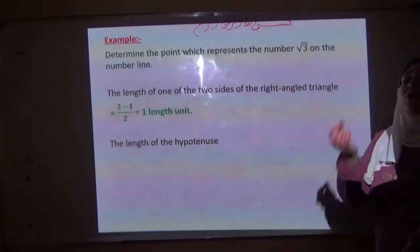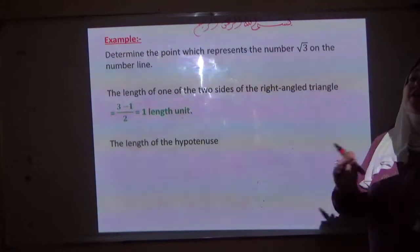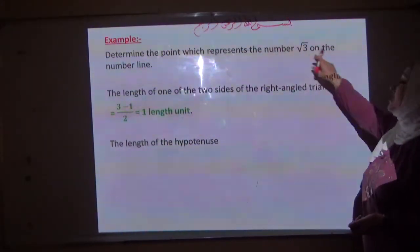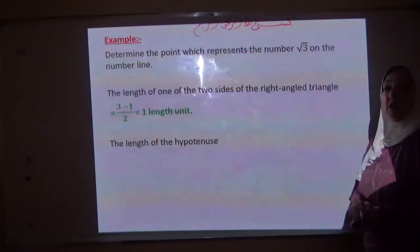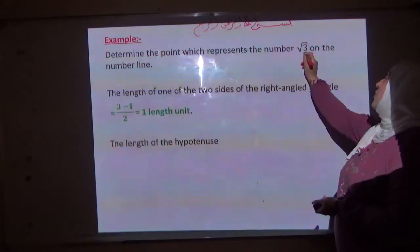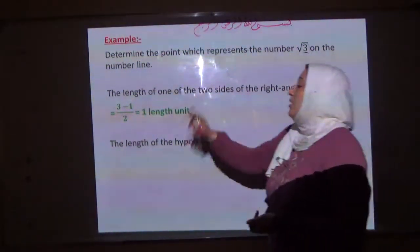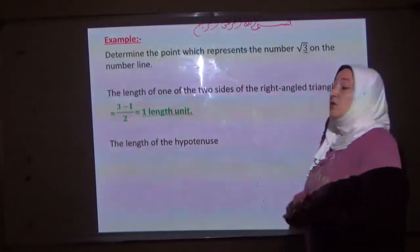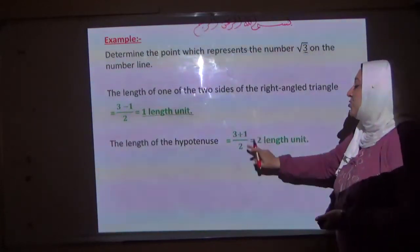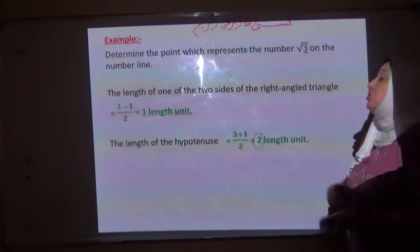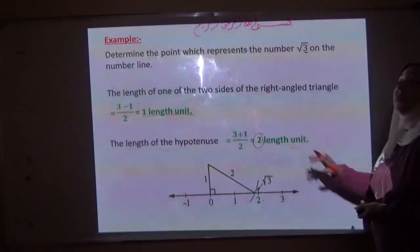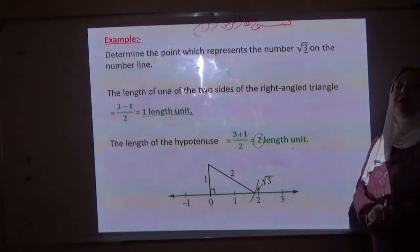How do we define the values of the side and the hypotenuse for any square root? For example, to determine the point representing square root 3 on the number line: one side of the right-angled triangle equals the number minus 1, divided by 2. So for root 3, that is 3 minus 1 over 2 equals 1 length unit. The hypotenuse equals the number plus 1, divided by 2. So 3 plus 1 over 2 equals 2 length units. We draw a right-angled triangle with side 1 cm and hypotenuse 2 cm.